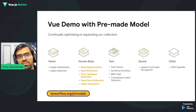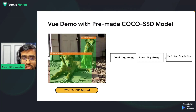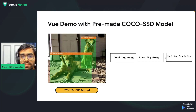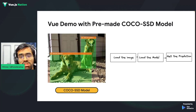The demo I'll be showing uses pre-trained models. If you go to tensorflow.org/js/models, those are all the pre-trained models you can directly integrate into your application. The one we'll specifically look at today is the COCO-SSD model, which is an object detection model — you upload an image or use a webcam to capture a frame, and it detects pre-trained classes or objects. As you can see in this example, we have an image of a dog and the model can uniquely identify the dogs and create a bounding box. You load the image, load the COCO-SSD model, and get the prediction.